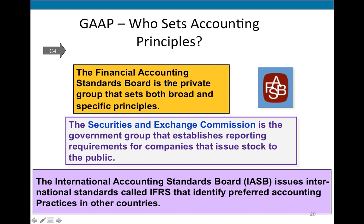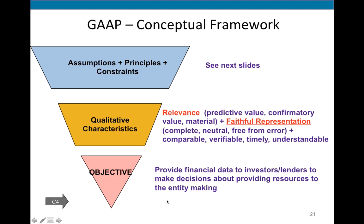GAAP is unique to the United States. Most other countries use a different set of standards called IFRS, International Financial Reporting Standards, developed by the IASB located in Switzerland. We will mostly focus on U.S. GAAP. The objective of GAAP is to provide financial data to external users — investors and lenders — to make decisions about providing resources to an entity.